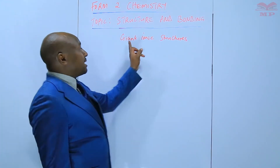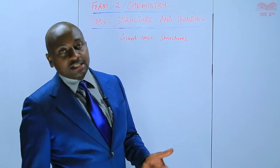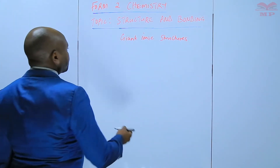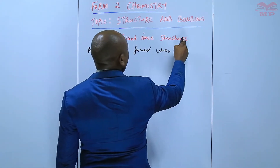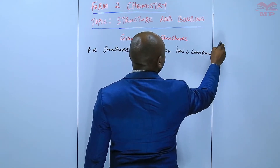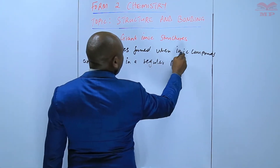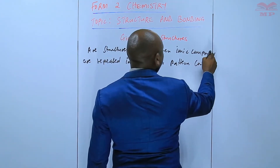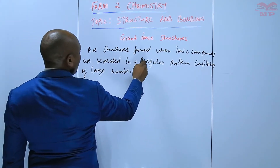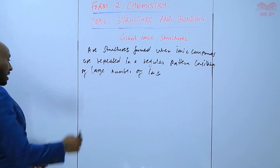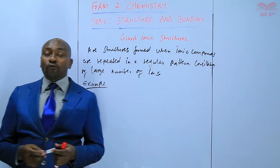And because that structure is usually very big, that's why it's called a giant ionic structure. It consists of a very large number of positive ions and negative ions — structures formed when ionic compounds are repeated in a regular pattern consisting of a large number of ions. We are going to look at an example of a giant ionic structure of sodium chloride.